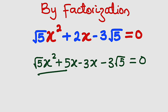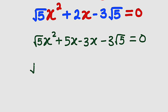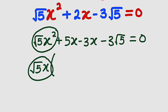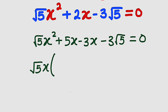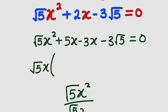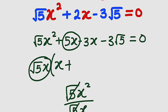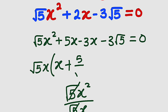Now we are going to factorize in batches — the first two and the second two. Let's start with the first two. We can factor out root 5x. If you have root 5x squared and you divide it by root 5x, root 5 will cancel root 5, and x squared divided by x will give us x. Plus, 5x divided by root 5x — you are going to obtain 5 divided by root 5, because the x's will cancel. So we have 5 divided by root 5.